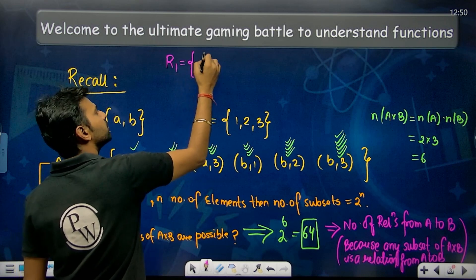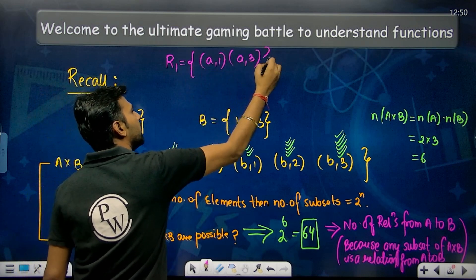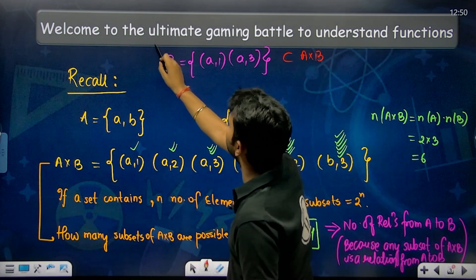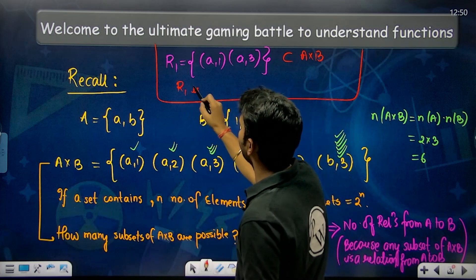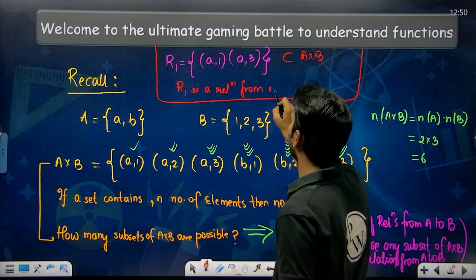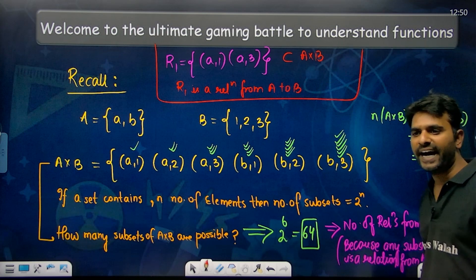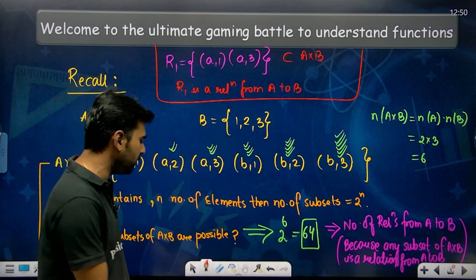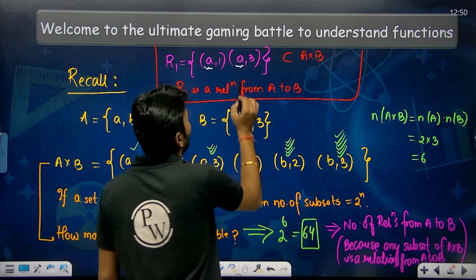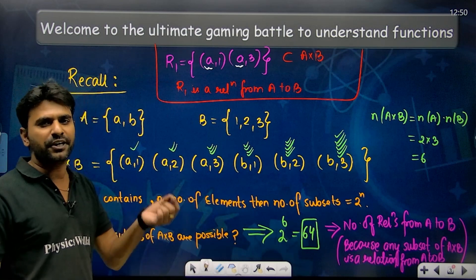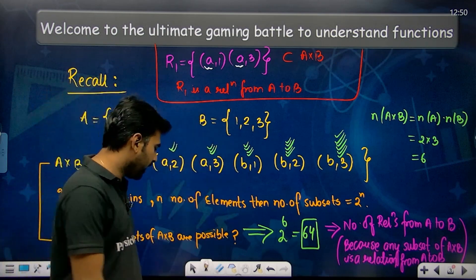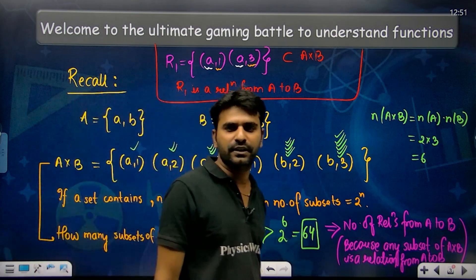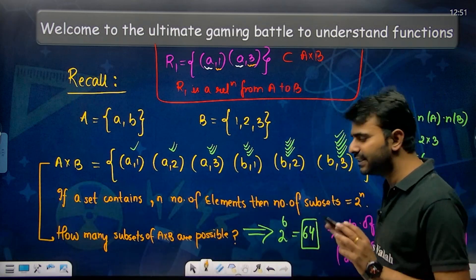For example, a relation R1 that is a subset of A cross B is a relation from A to B. The domain of R1 is the set of first elements in the ordered pairs, which is {a}, and the range is the set of second elements, which is {1, 3}.